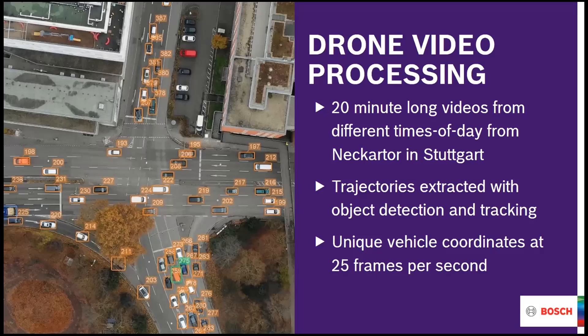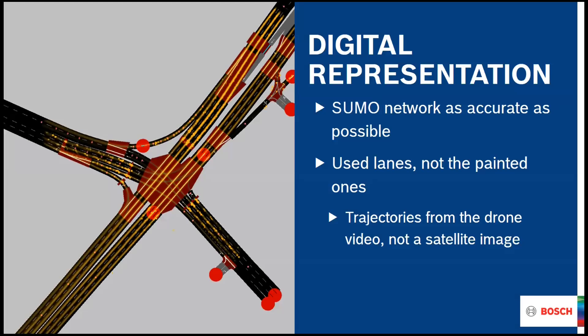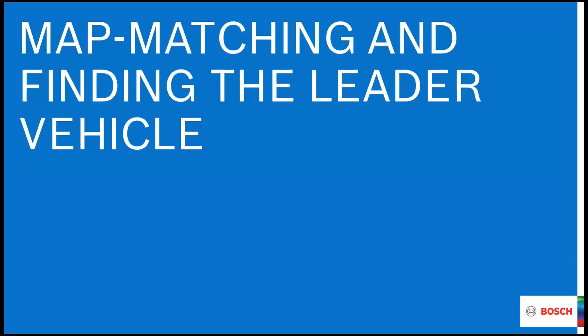After we got the results, the next step was to create a digital representation. Naturally, we used SUMO's NetEdit tool for that. One important point was that we had to create this representation as accurately as possible, so we used the trajectories from the drone video — not a satellite image or a still frame. You can see a heat map plotted over the network, and most of the time it's unambiguous which lane a vehicle chose in reality.